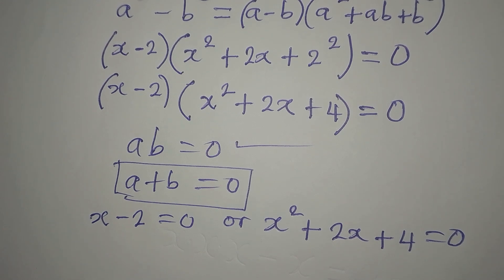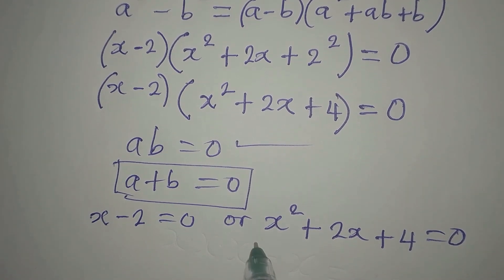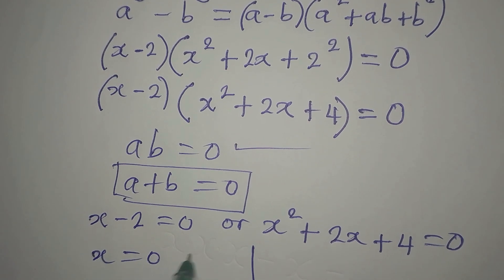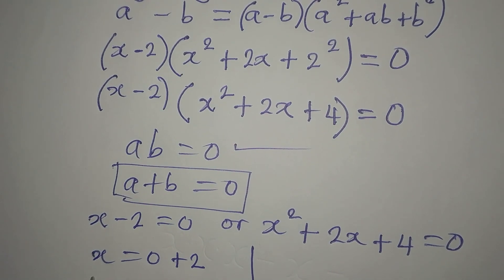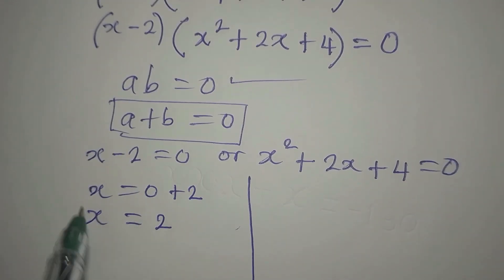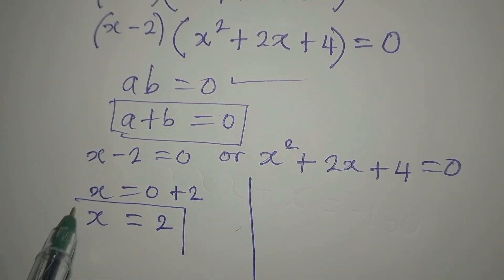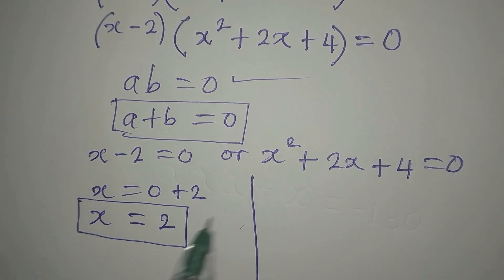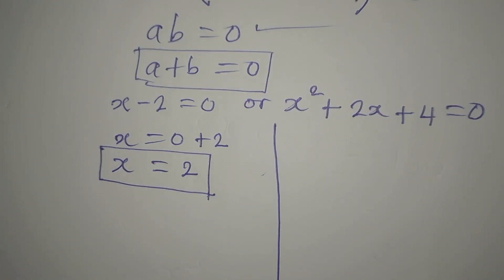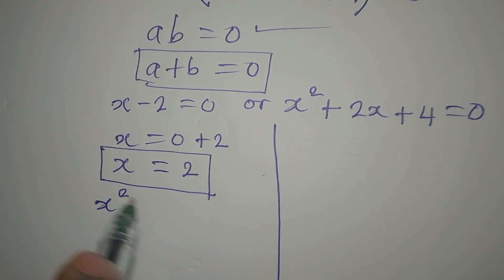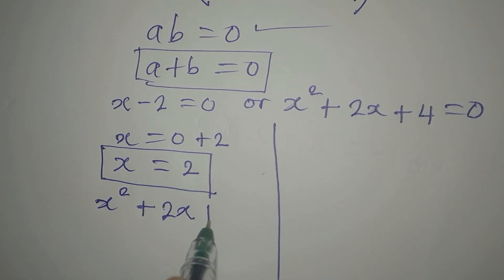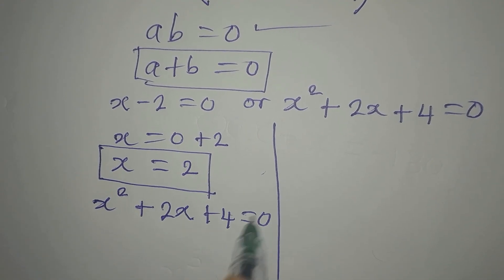Now I am going to pick the first factor. If x minus 2 equals 0, then x equals 0 plus 2, so our x is equal to 2. This is a solution. But we want more solutions, so let's go to the quadratic equation: x squared plus 2x plus 4 equals 0.